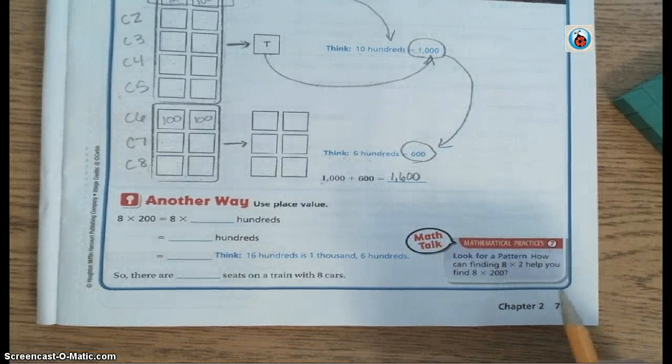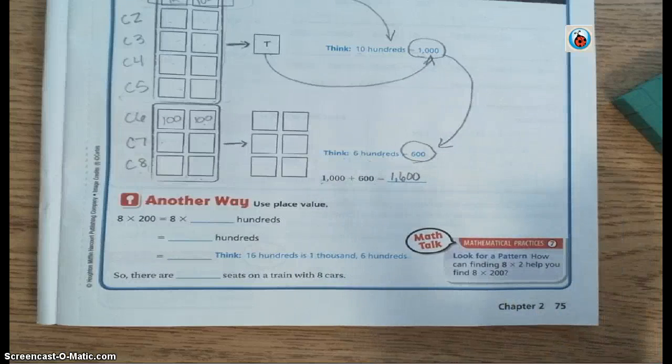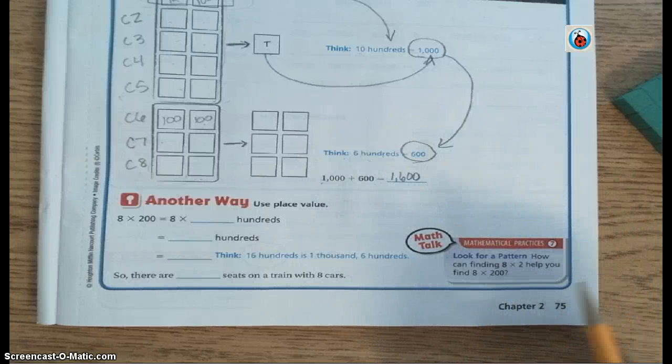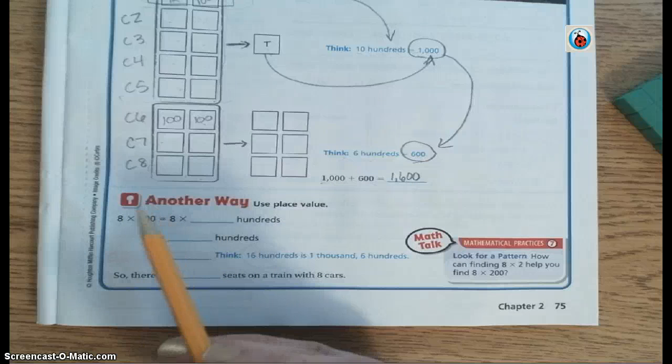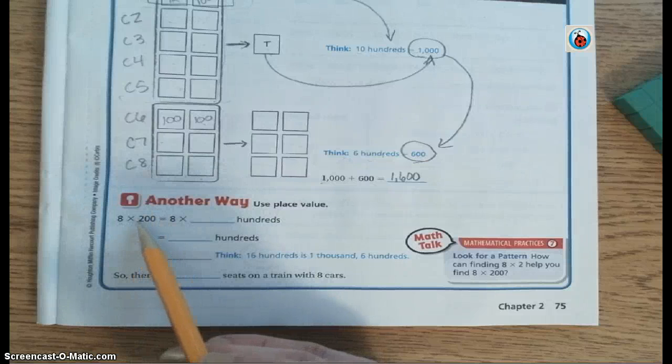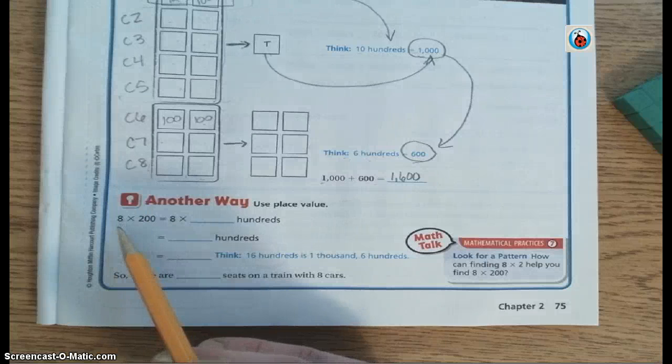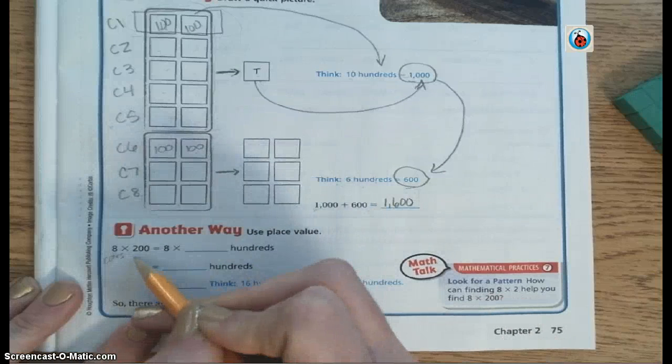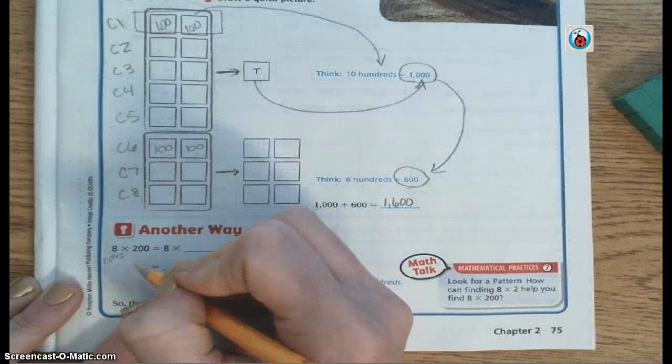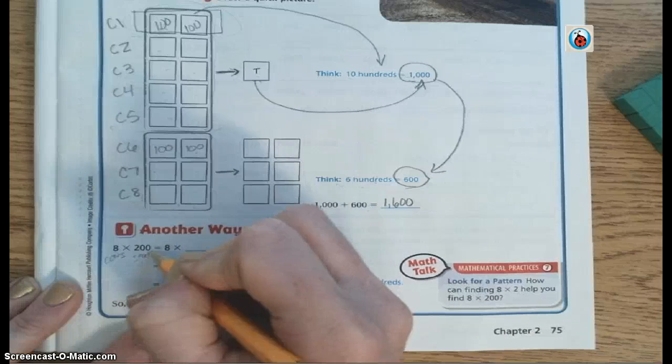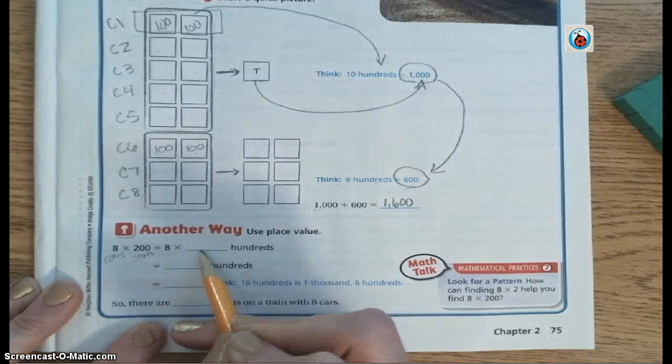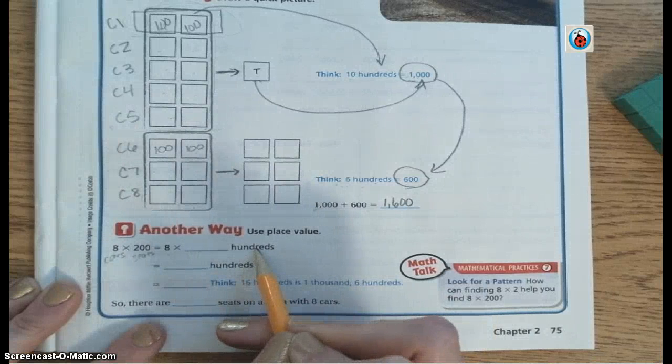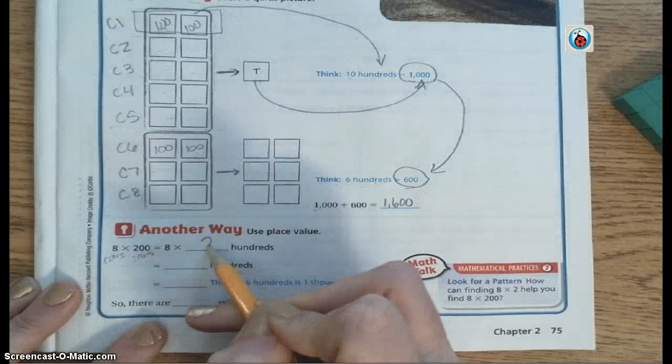Another way you can use your knowledge of place value. After chapter one, you should feel pretty good about place value. So instead of drawing a picture, you could use your knowledge of place value. We know that eight cars is how many we have. So we have eight cars. For each car, there are 200 seats. So eight times how many hundreds? Well, eight times two hundreds.